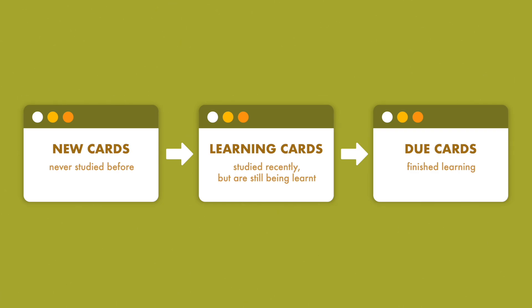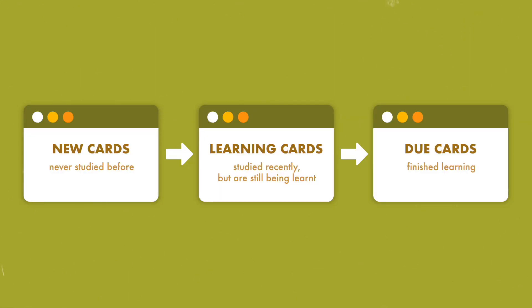Once you've mastered your learning cards, over time they become Due cards — cards you've mastered. But the goal of Anki is to reinforce long-term memory, so although you know these cards well enough, they won't completely disappear from your reviews. They will still appear over time to reinforce long-term memory. But compared to learning cards, the review interval for Due cards is much greater or much longer, so they appear further into the future.